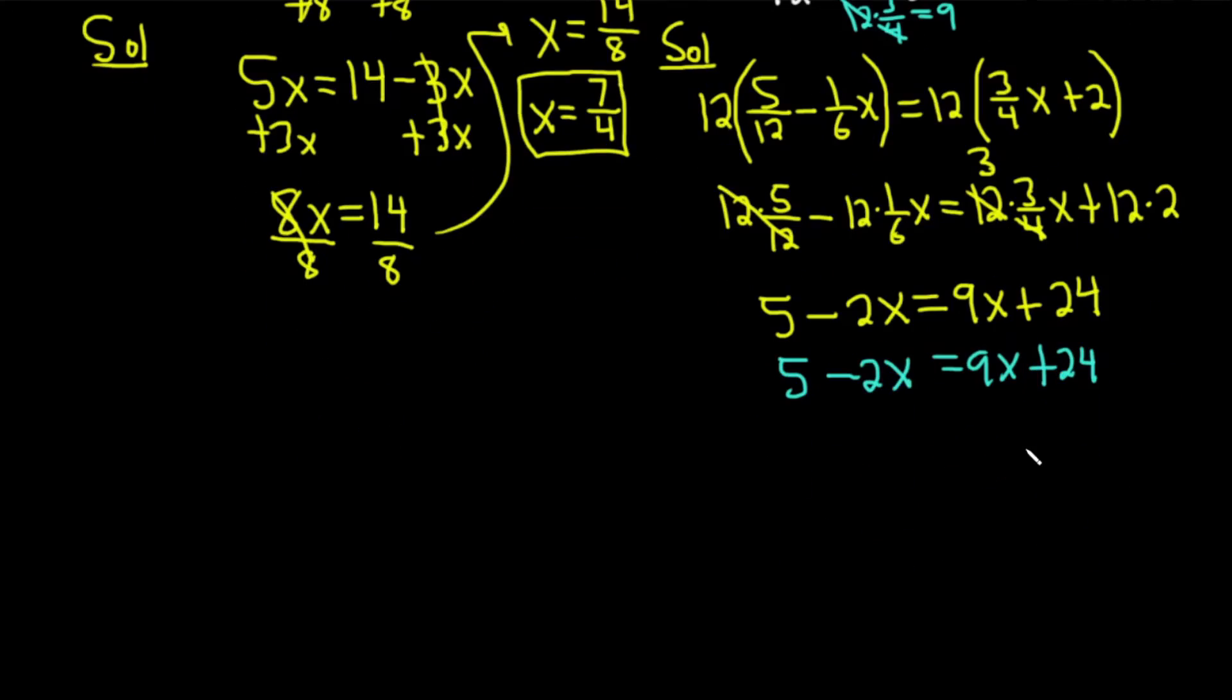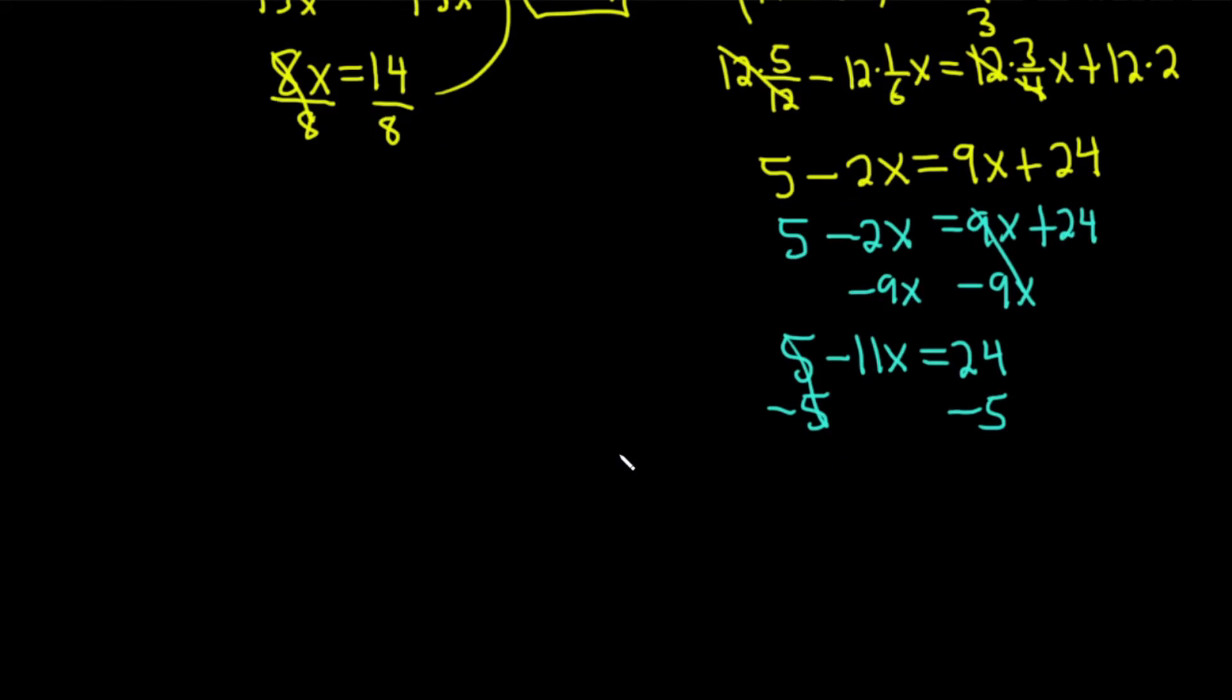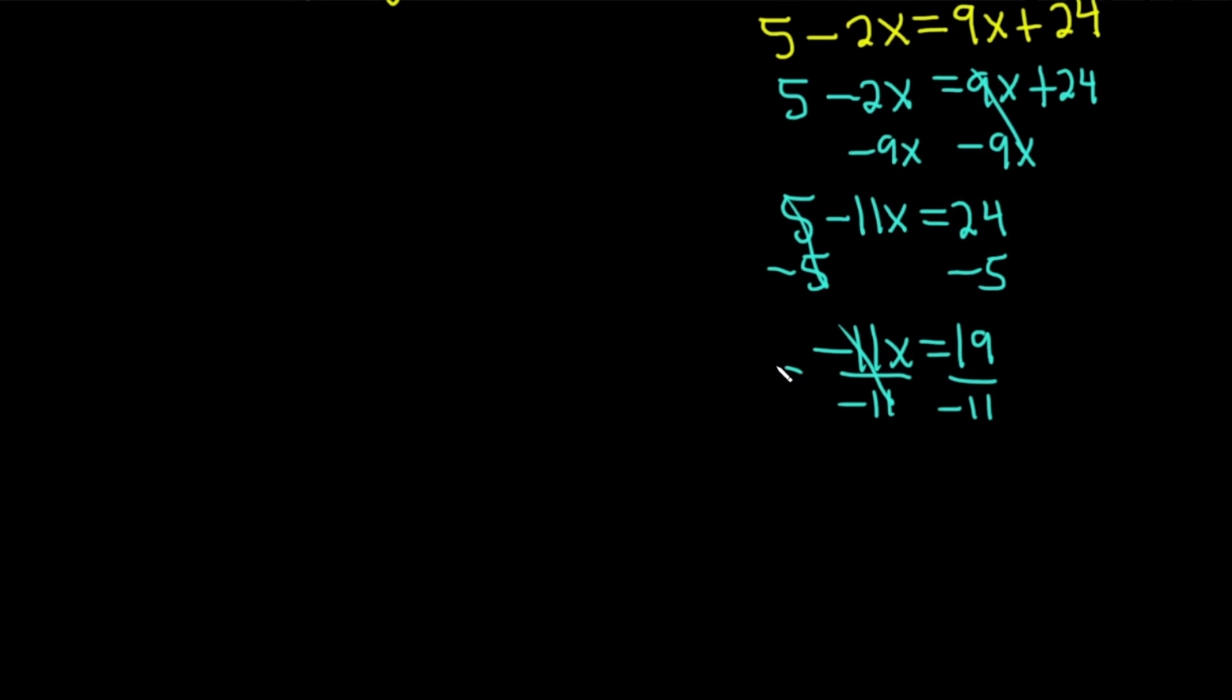Now we just have to solve this equation, which is like part A. I'll subtract the 9x. We get 5 - 11x because -2 - 9 is -11, and that equals 24. We can subtract the 5 from both sides, which gives us -11x = 19. Finally, we divide by -11, so we end up with x = -19/11.